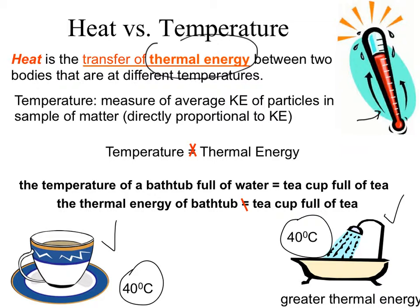If you pour a teacup of hot tea into a cold pool, there won't be much effect — not a huge temperature change or much energy transferred. But if you dump a bathtub of warm water into the pool, there's more thermal energy to be transferred, and you'll probably see a temperature increase. So temperature measures the kinetic energy of particles in a body, while thermal energy is determined by the amount of mass or substance present.